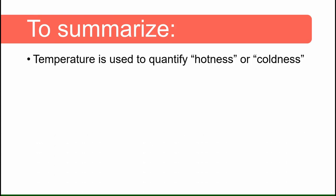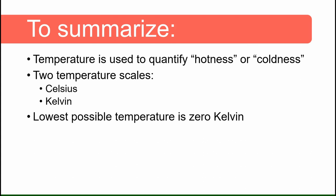To summarize, temperature is used to quantify how cold or hot something is. There are two temperature scales we discussed, Celsius and Kelvin. The lowest possible temperature is zero Kelvin and as such Kelvin is called the absolute temperature because you get absolute zero in Kelvin.